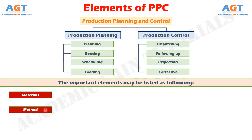Method also includes determining the best sequence of operations, process plan, and planning for tooling, jigs and fixtures. Number 3: Machines and Equipment. Manufacturing methods are related to production facilities available in production systems. It involves facilities planning,